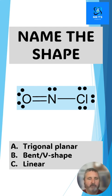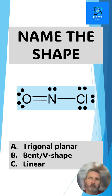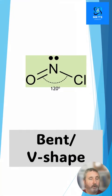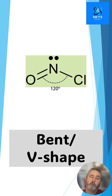Last molecule here. This is N with a double bond to an oxygen and a single bond to a chlorine. We want to know whether this is A trigonal planar, B bent or V-shaped, or C linear. The trick here is to realize that the single bond, the double bond, and the lone pair are all electron density regions that push away from each other equally, reducing to an angle of 120 degrees — a bent V shape. Remember its base shape was trigonal planar.